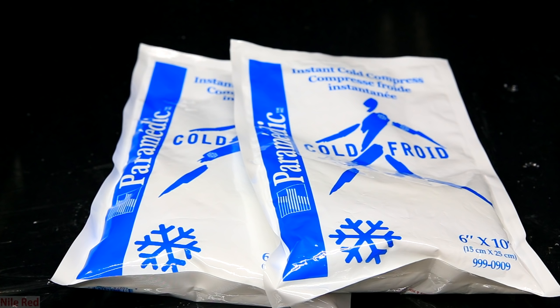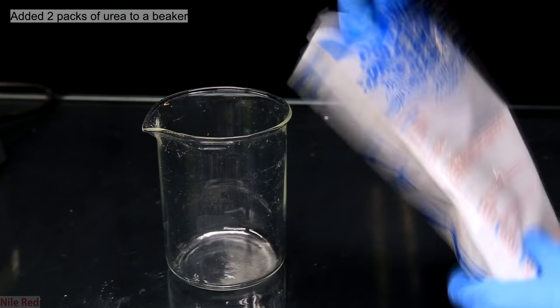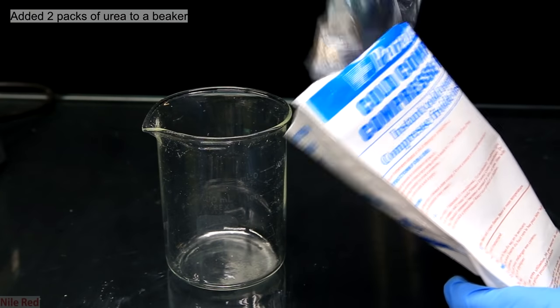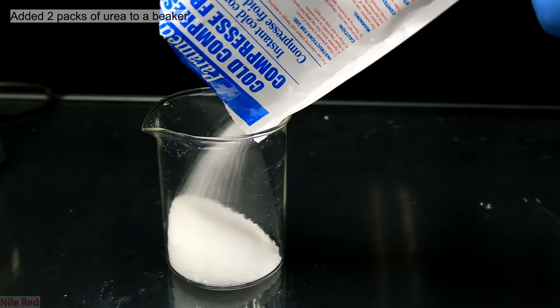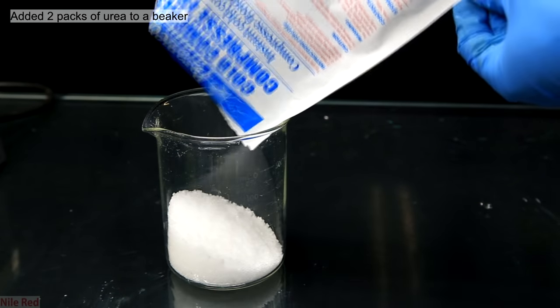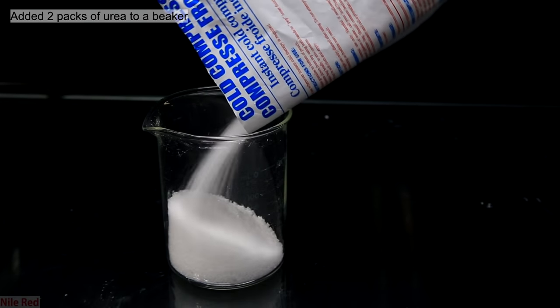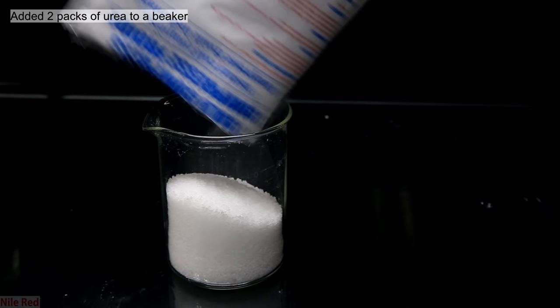For this video, I'll be recrystallizing urea that I got from two instant cold packs. In America, these are very common and easy to find. Some cold packs though do use things like ammonium nitrate, so always be sure to read the ingredients. Like ammonium nitrate, urea is used because when it dissolves into water, it cools down. I start out by pouring the contents of two cold packs into a beaker. To do this, the cold packs cut open and a small bag containing water is removed and then everything else is poured into the beaker.